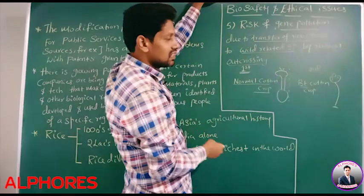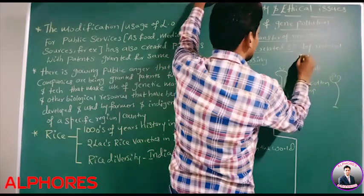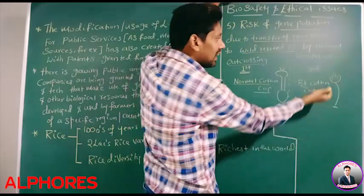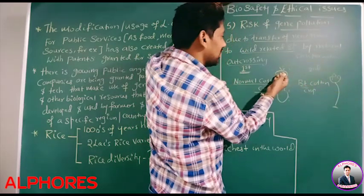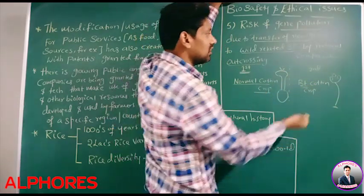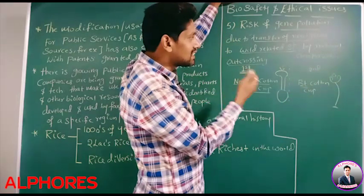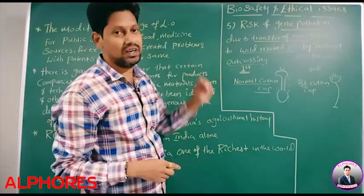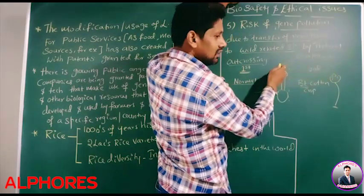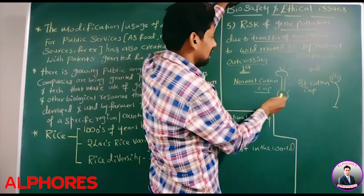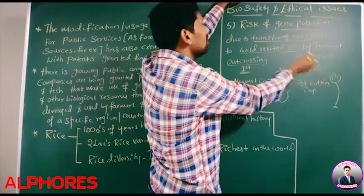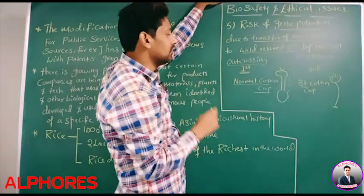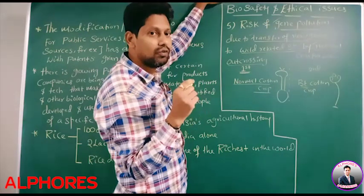Out crossing means nothing but cross pollination. We are not manually transferring the pollen grains from anther to stigma — in nature itself this cross pollination takes place. So we call it natural out crossing, that is natural cross pollination. Due to this, wild related species receive new genes, which leads to gene pollution.